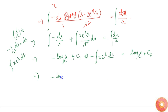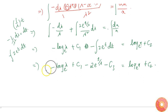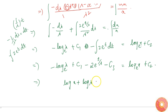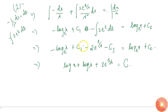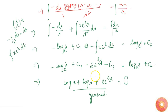Combining all constants into one constant C, we get: −log λ − 2e^(1/λ) = log x + C, which rearranges to log x + log λ + 2·e^(1/λ) = C. Substituting back λ = y/x, the general solution is: log x + log(y/x) + 2·e^(x/y) = C, which simplifies to log y + 2·e^(x/y) = C.